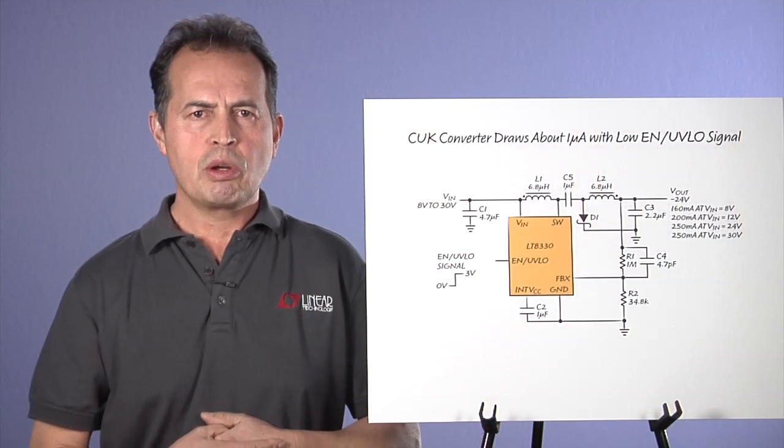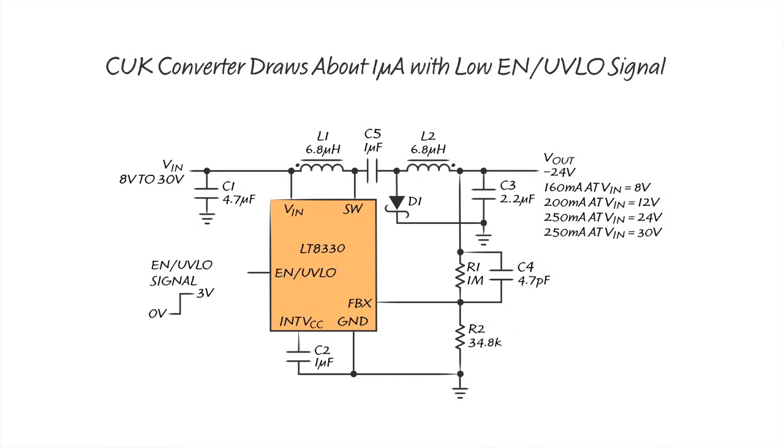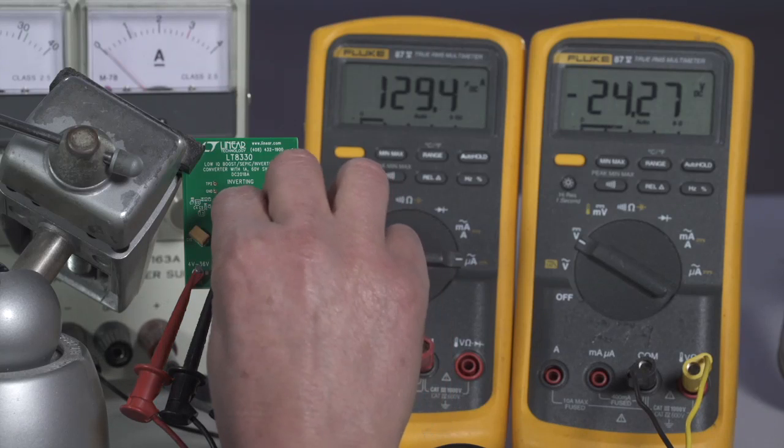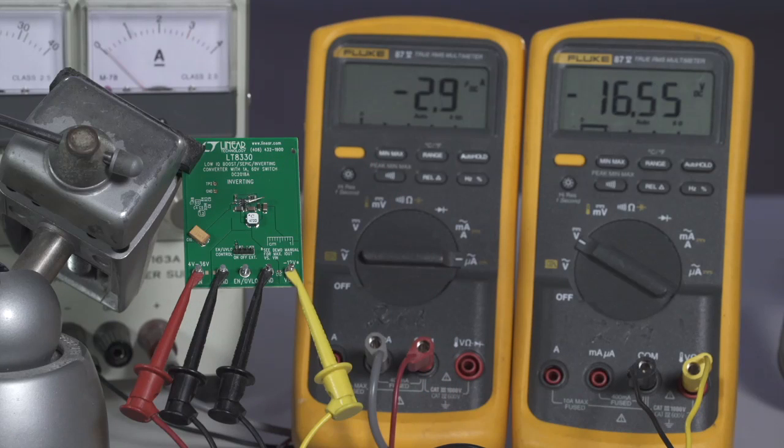For applications that require negative rails, a Ćuk converter can be used with minor modifications. In this Ćuk converter, quiescent current is a mere 1 microamp when the EN UVLO pin is low and about 100 microamps in active mode when the output is unloaded.